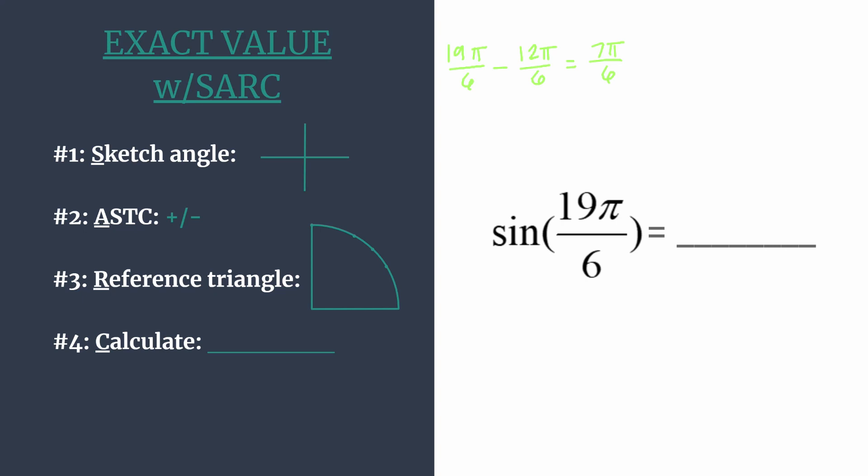So we can go ahead and sketch our terminal side now. We know we're rotating in the counterclockwise direction because our angle is positive, so here we have 0, halfway around is π, or you could think of that as 6π over 6 if that's helpful.